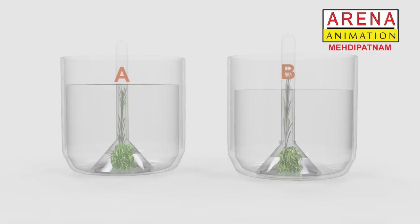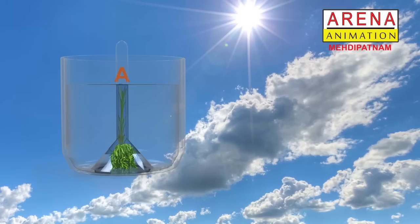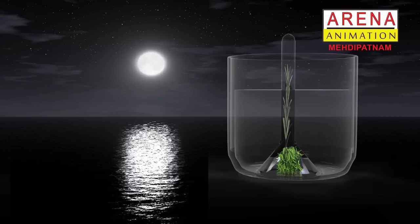Prepare another identical setup by doing the same as above. Tag the two setups as A and B. Keep apparatus A in sunlight and apparatus B in a dark place without disturbing for at least two hours.